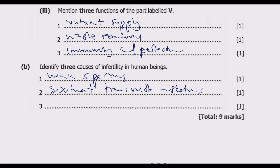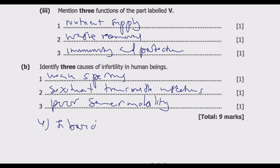Third, poor sperm motility can also cause infertility. Sperm motility refers to the ability of sperm to move efficiently, and without efficient movement towards an ovum, fertilization cannot occur. Fourth, fibroids — specifically uterine fibroids — are non-cancerous growths in the uterus that can block the fallopian tubes or change the shape of the uterus, preventing the fertilized egg from reaching the uterus, which can lead to infertility.